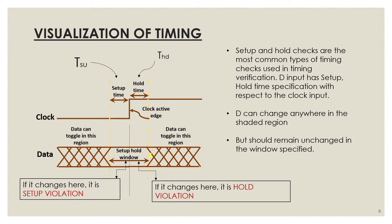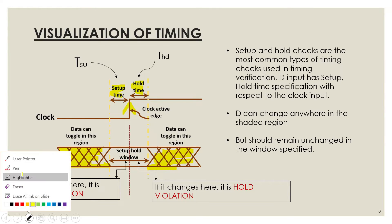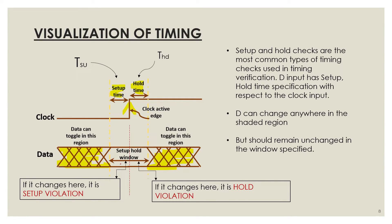Let us visualize this with the diagram. This is the active edge of the clock. The D input can change anywhere in the shaded region — there is no problem. But D must be stable and unchanged within the particular window called the setup-hold window. If D changes in the non-shaded region before the active edge, it is a setup violation. If D changes in the non-shaded region after the active edge, it is a hold violation.